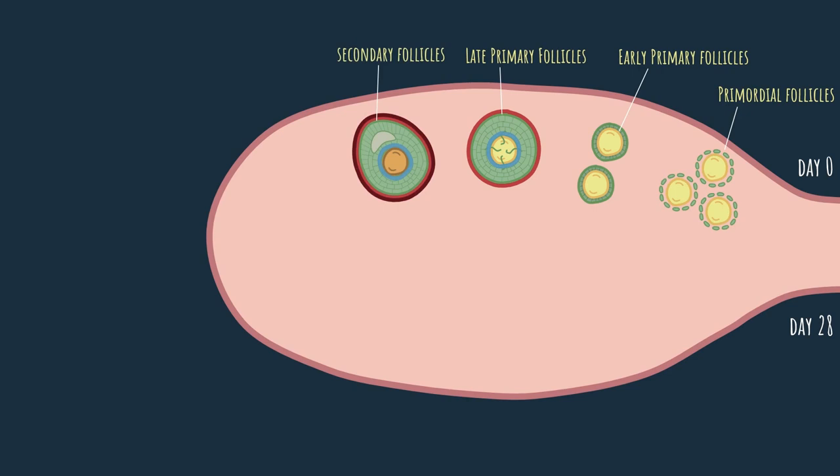As the cycle continues, the granulosa cells also continue to proliferate and enlarge the follicle. These granulosa cells also begin to secrete fluids into the space between them and form a vesicle, which you can see here. This vesicle is called an antrum, and when this antrum appears, the follicle is considered to be a secondary follicle.